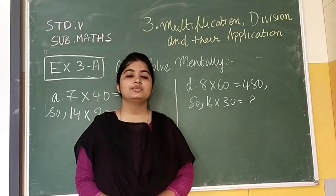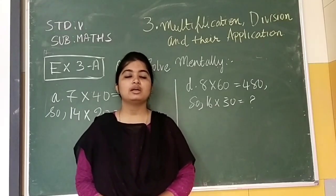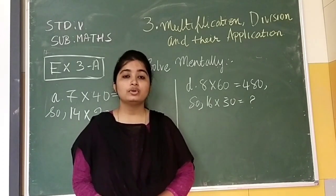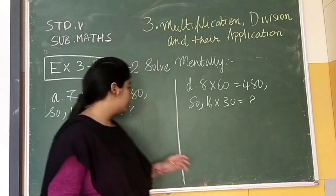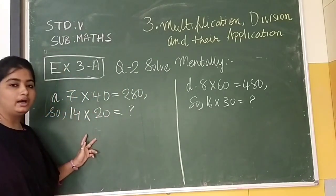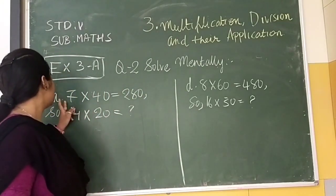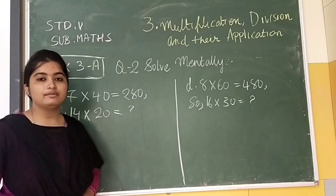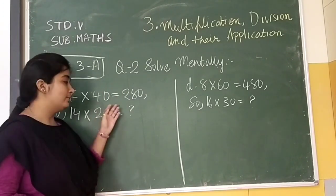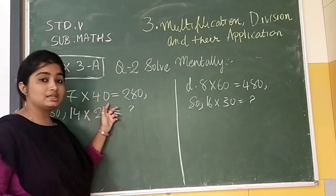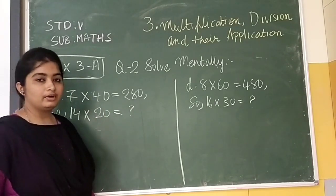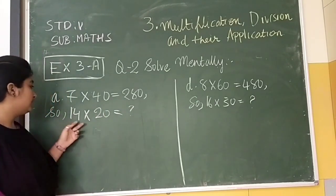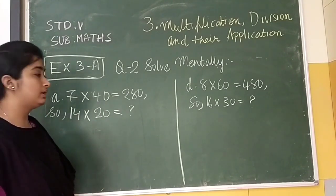Now let's see the next sum. We don't have to do any calculation, we have to just find the strategies and give the answer. In the first one, you can see that 7 into 40, we have given the answer: 7 into 40 is 280. We have to find 14 into 20.